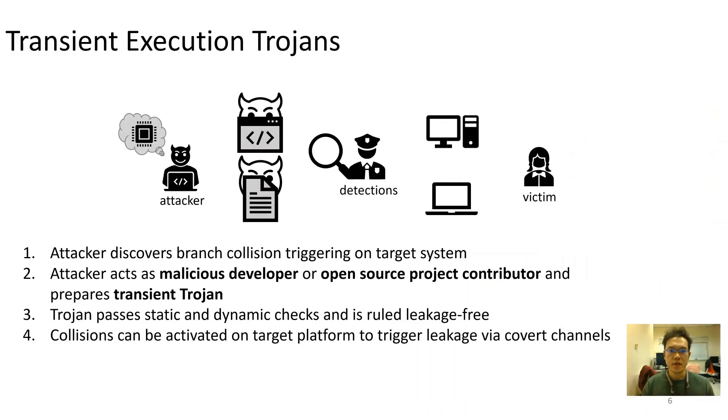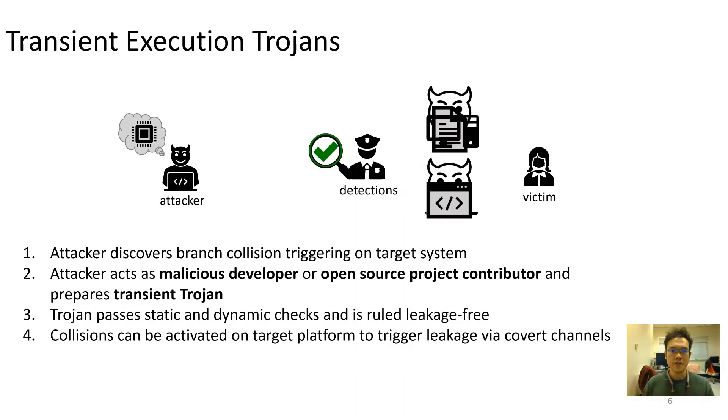The goal of such a transient trojan is to appear as a benign leakage-free application. It can pass all kinds of static and dynamic checks as it contains no malicious instructions anywhere in its codebase. However, when the trojan is triggered, it activates branch instruction collision, resulting in malicious code being executed in transient mode. As a result, user secret could be leaked due to the violation of microarchitecture state.